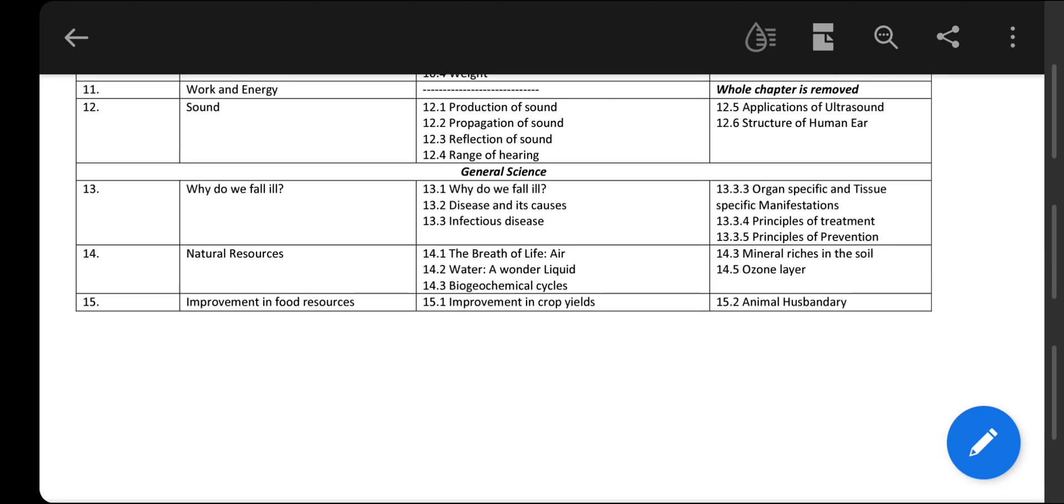Chapter 13, Why Do We Fall Ill, you have to study the first topic with the same name, disease and its causes is the second topic, and infectious disease is third. The excluded topics are organ specific and tissue specific manifestations, principles of treatment, and principles of prevention.